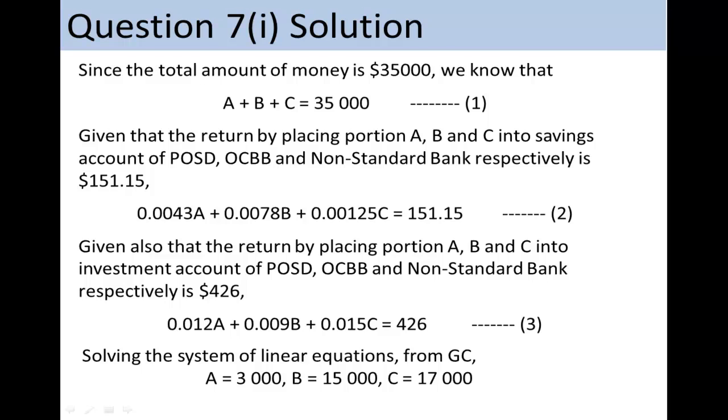Solving the system of linear equations from GC, we obtain that A equals $3,000, B equals $15,000, and C equals $17,000.